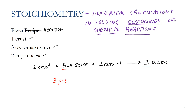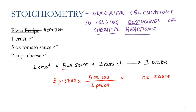If I have three pizzas and I want to know how many ounces of sauce, I can create a conversion factor that shows the relationship between the sauce and the pizza: for every one pizza, I need five ounces of sauce. So three times five gives me 15. The pizza units cancel out, and I'm left with the units I want — ounces of sauce. Even though it's an easy calculation to do in our head, this is what we're really doing, and this is where the analogy leads us to stoichiometry.